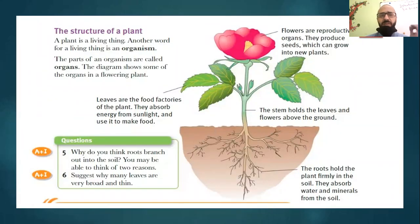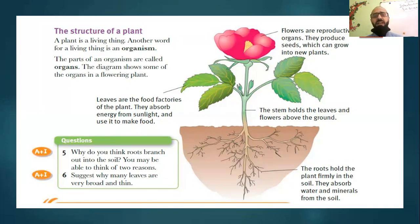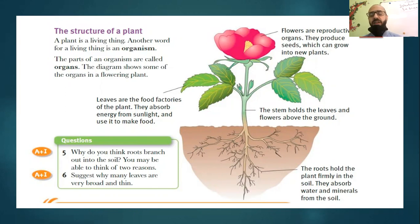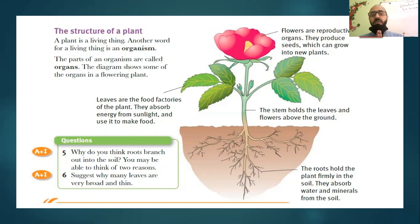We should know the function of each part and how these parts help plants. The plant is a living thing — another word for a living thing is an organism. So if I ask you what is the meaning of organism, you would say a living thing is an organism — which can eat, grow, and move. The parts of an organism are called organs. The diagram shows some of the organs of a flowering plant.